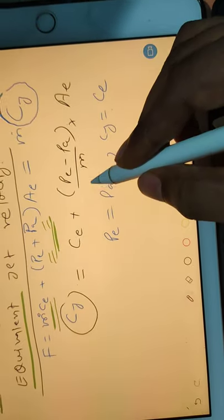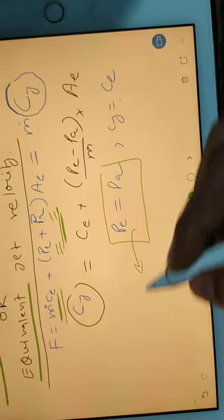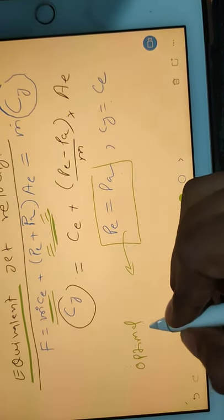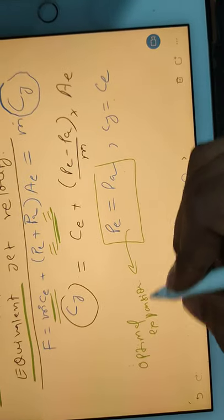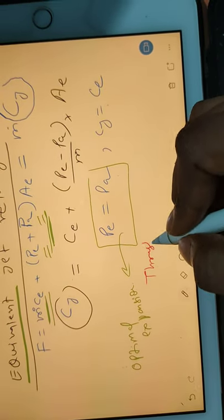This case is known as optimal expansion. In case of optimal expansion, your thrust will be maximum.